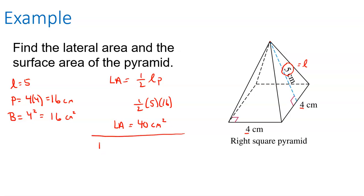For total surface area, I add the lateral area plus the area of the base. There's only one base — no base on top, just a vertex. So that's 40 plus 16, both in square centimeters, giving a total surface area of 56 square centimeters.